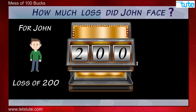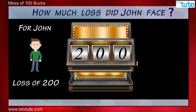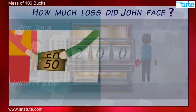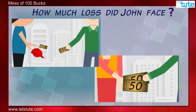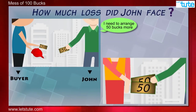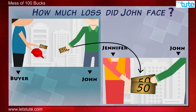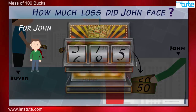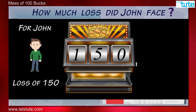No, there is some mistake. After selling the cap, John was left with 50 bucks and he had to arrange only 50 more to give it to Jennifer. So in total, it's a loss of 150 only, right?